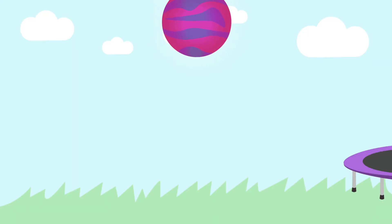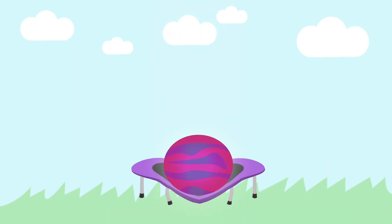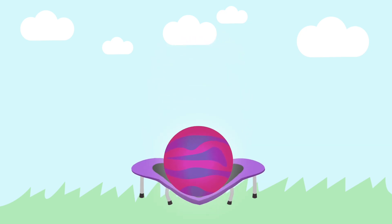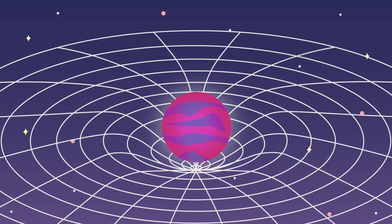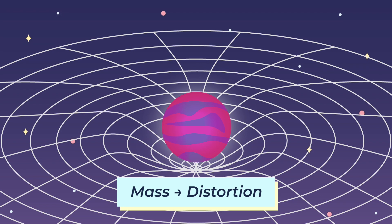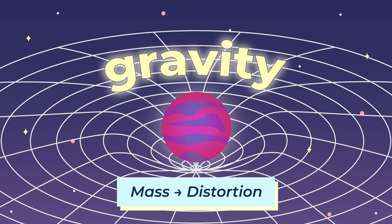Think of it like this. Imagine a really, really heavy planet on a trampoline. The depression, or the warp, is just a natural occurrence due to its heavy mass. Now imagine that the trampoline is space. Mass leads to a distortion, and this distortion is an effect that we perceive as gravity.